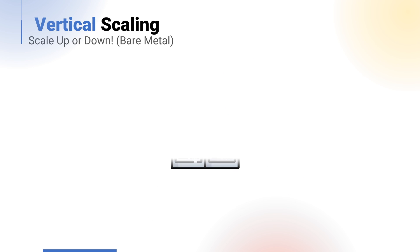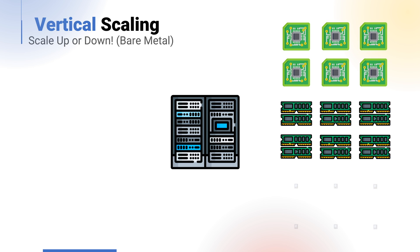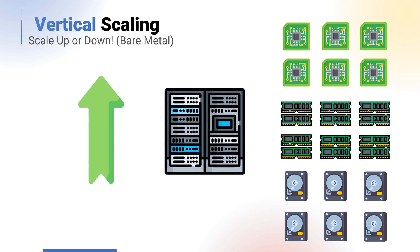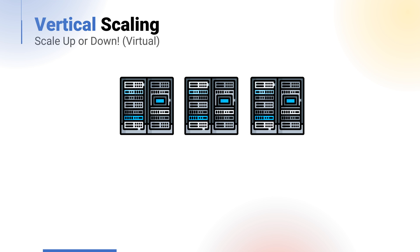Vertical scaling — scale-up — is a change of configuration to the underlying infrastructure, specifically the existing resources already available. From a bare metal computing viewpoint, this would be adding additional resources such as CPU, memory, and hard disks to existing compute to vertically scale the overall resources available. Although this is possible with physical compute, it isn't really that practical as it involves physical interaction with hardware. Typically, vertical scaling applies more to virtual computing.